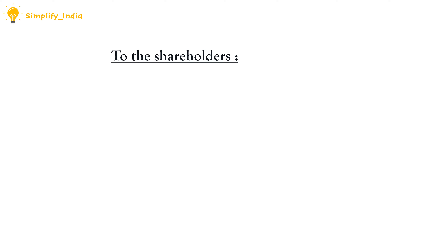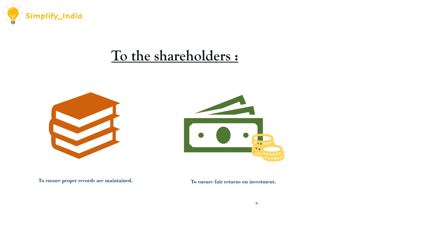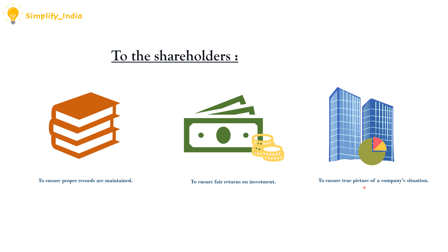From the point of view of shareholders, cost audit ensures proper records are maintained for purchases and the proper utilization of all materials and expenses incurred on various items like wages and overheads. It also makes sure that industrial units are working efficiently and economically. Next, it ensures fair returns on investment, which reflects managerial efficiency or inefficiency to the shareholders, and it ensures a true picture of the company's state of affairs, revealing whether resources like plant and machinery are properly utilized.